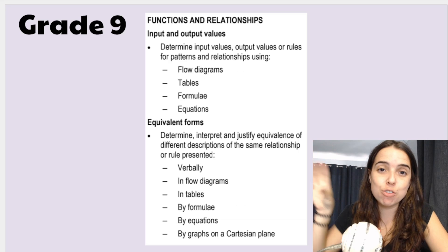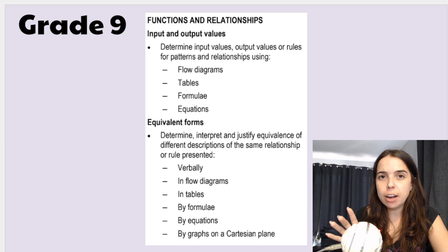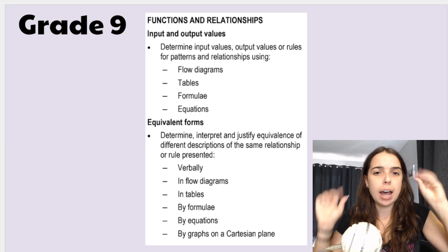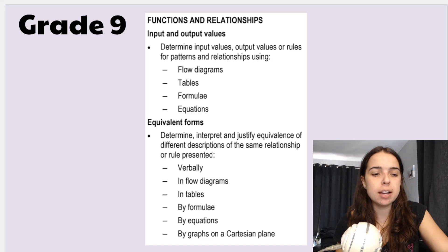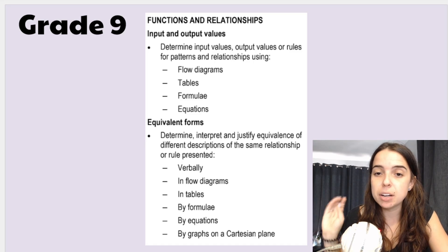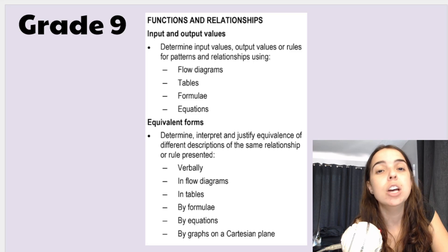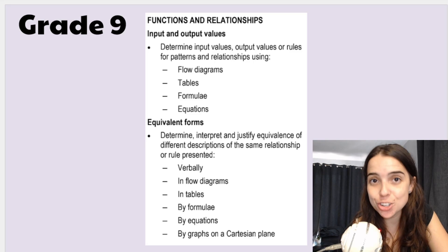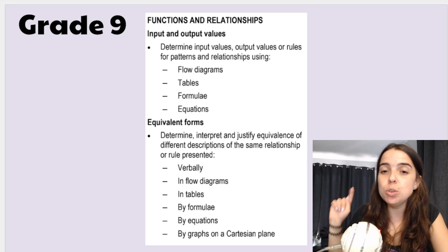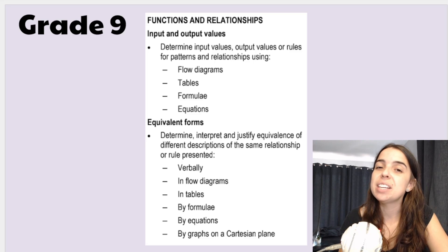In grade 9 we've also got functions and relationships — working with inputs, output values, flow diagrams, tables. When you put in X, what do you get for Y? Writing that as an equation, a formula, or in a table. You did this in grade 8, so go revise it. Because after this section in grade 9 is a section on straight line graphs or linear functions — a new section that can be quite difficult for grade 9s. But you need to understand the basics of functions and relationships before you can do that.